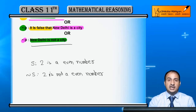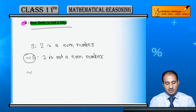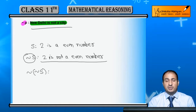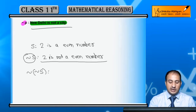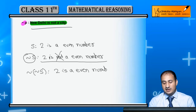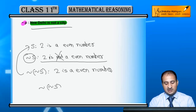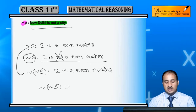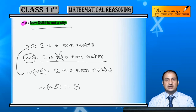Ab agar aap negation ka negation nikalein - yani already negation bata chuke hain kisi statement ka, aur iska phir se negation nikalein - yani double negation. Negation of negation S: '2 is not an even number' ko deny karna hai. Simply 'not' ko hata denge, toh aa jayega '2 is an even number.' Aap dekh rahe hain ki jab negation of the statement ka negation nikala, toh woh nothing but purana statement aa gaya. Yani double negation of any statement original statement hi hoti hai.